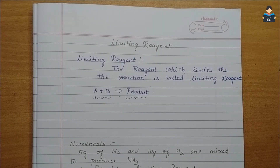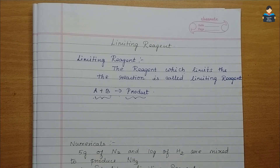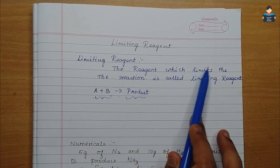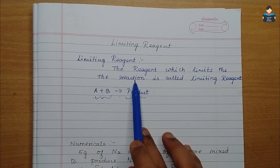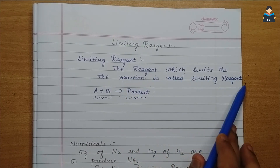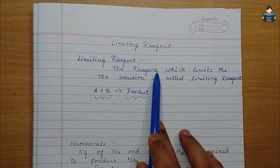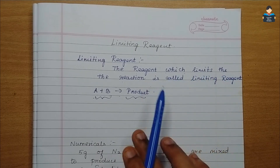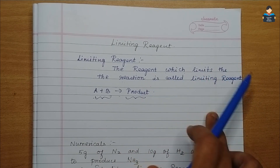Hello everyone, welcome to our channel. In this video, Class 11 Chemistry Chapter 1, we will discuss the topic of limiting reagent. The reagent which limits the reaction is called the limiting reagent — one reagent stops the reaction, so it is called the limiting reagent.